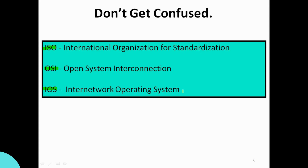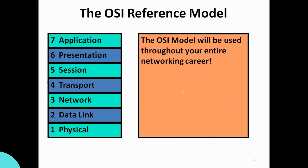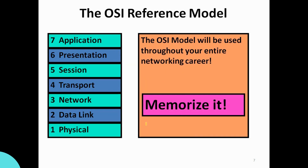Also do not confuse OSI with IOS — the Internetwork Operating System used in routers and switches. So to clarify: ISO is International Organization for Standardization, OSI is Open System Interconnection, and IOS is Internetwork Operating System. The OSI reference model is a reference model for networking. Data travels through the layers like a packet sent via signals.